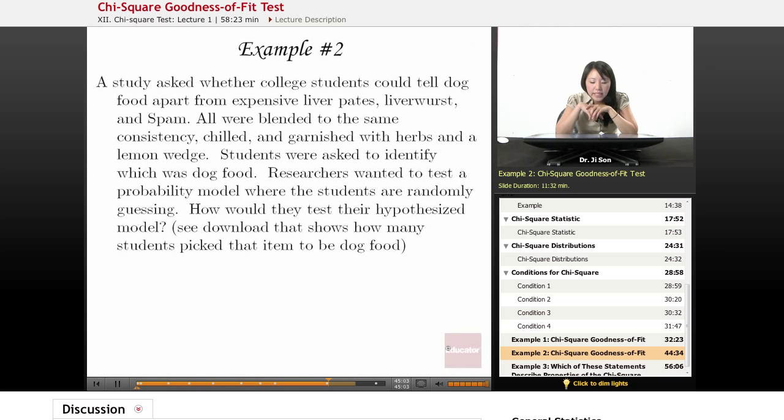Researchers wanted to test a probability model where the students are randomly guessing. How would they test their hypothesized model? See the download that shows how many students picked that item to be dog food. College students have a bunch of different choices. They have dog food,